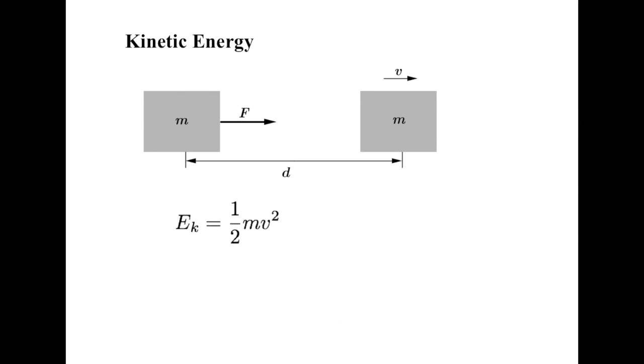Before we continue, I want to do one more thing with this formula. I'm going to divide the mass over to the left and replace the ek with epsilon k. This is now an energy density formula, measured in joules per kilogram. It will simplify our upcoming work. I did the same thing back in the vis-viva equation video.